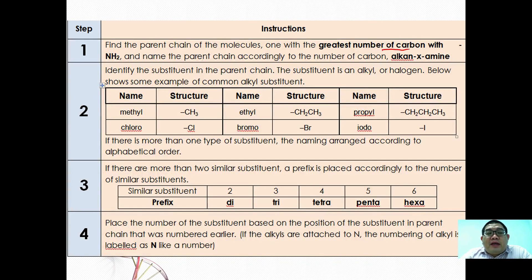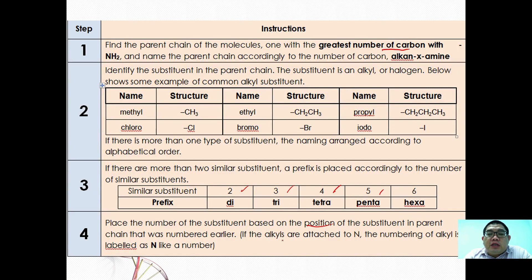If there are more than two similar substituents, use a prefix accordingly: two similar = di-, three similar = tri-, four similar = tetra-, five similar = penta-, and so on. Finally, place the position number of each substituent based on its position in the parent chain. If the alkyl is attached to the nitrogen, the locant is labeled as 'N'.